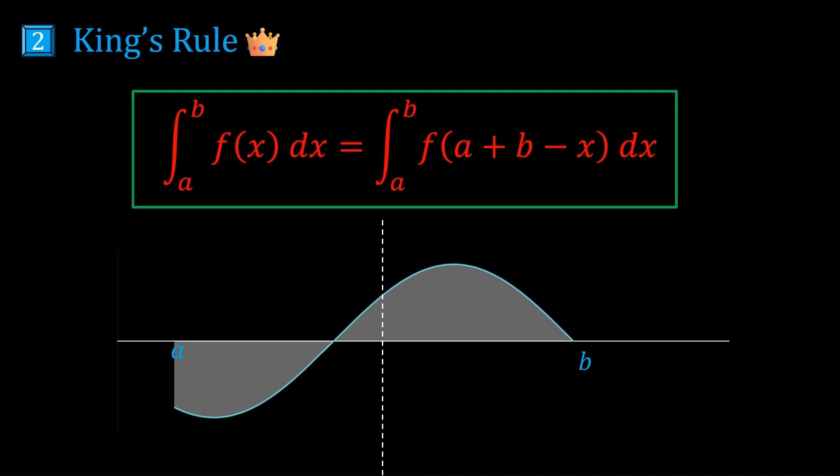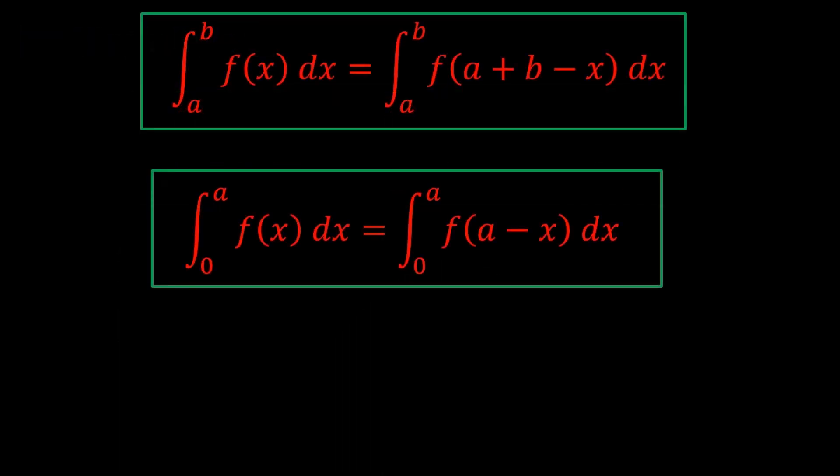We haven't changed anything about the integral. We've just changed which way we're looking at the function. The most common form of King's Rule is when the bottom bound is zero, giving us this formula. We're going to be using this.